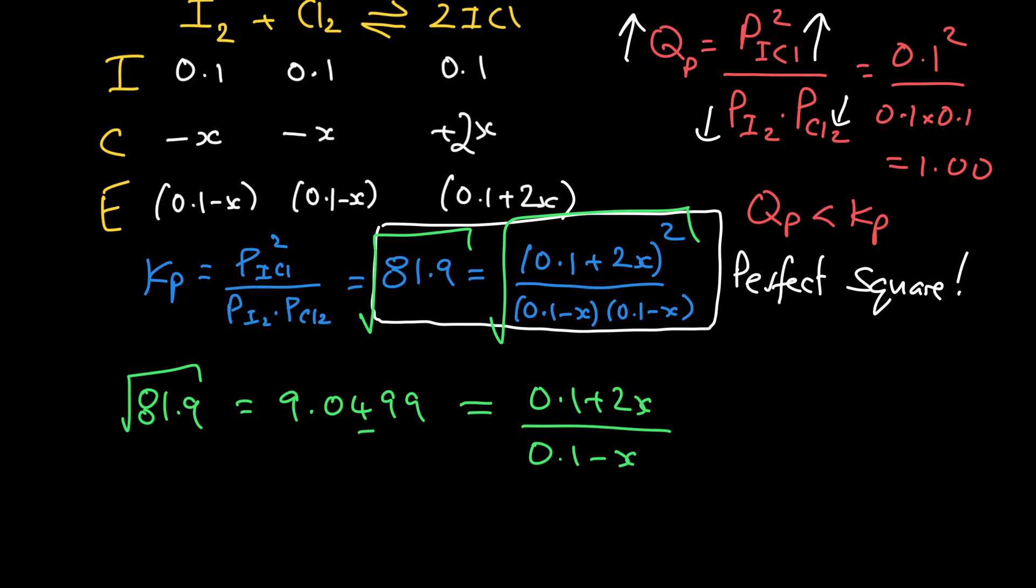At this point here, we've got to do a little bit of work so we can cross multiply and rearrange, so we get 9.0499 times 0.1 minus X equals 0.1 plus 2X. And with a little bit of rearranging, I get X to be 0.07285. That's probably one more significant figure than we need.